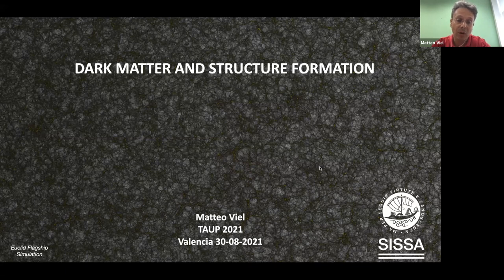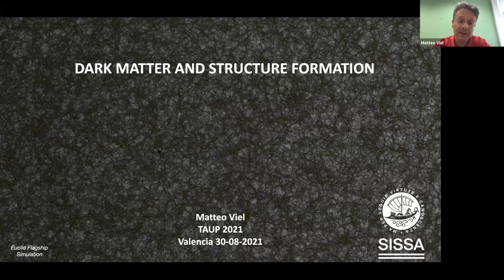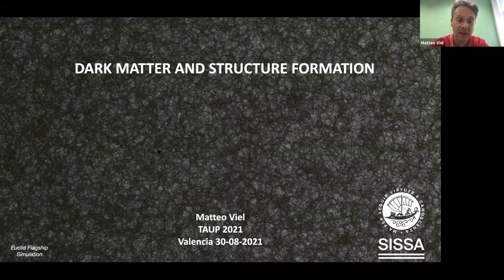What you see here in the background is a numerical simulation, the so-called Euclid flagship simulation, that simulates the large-scale structure of the universe. The size of the simulation is about four gigaparsecs — relatively huge at high resolution. This is the backbone of the Euclid pipeline, where researchers paint astrophysical information: galaxies, star formation, systematics, and then recover parameters like the neutrino mass out of these mock datasets.